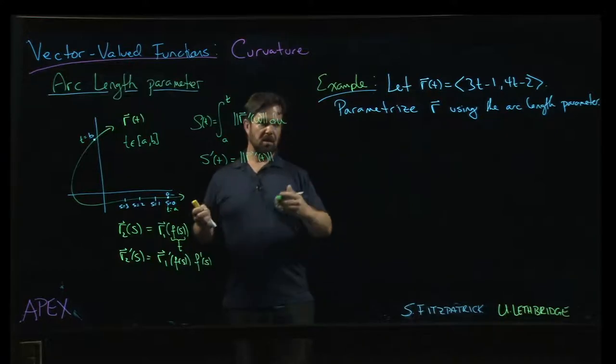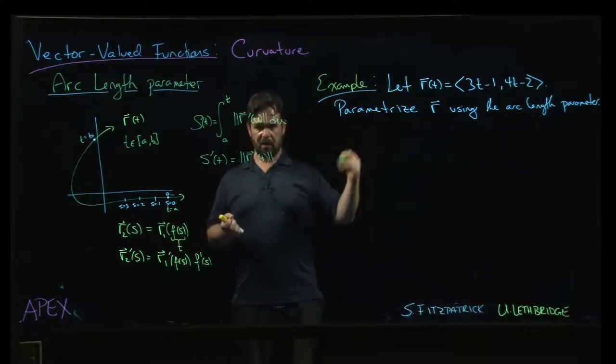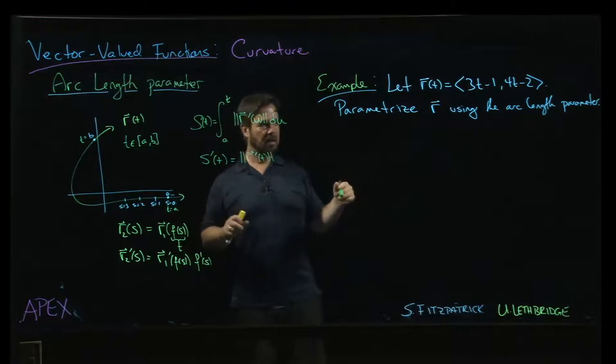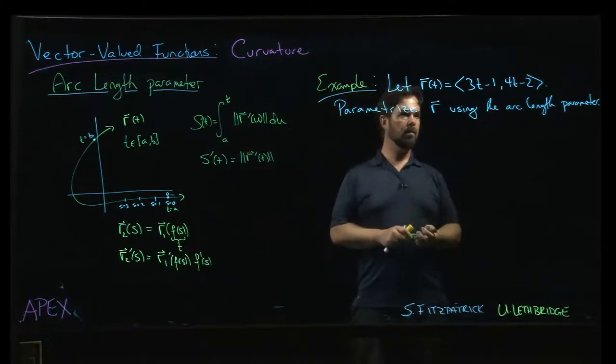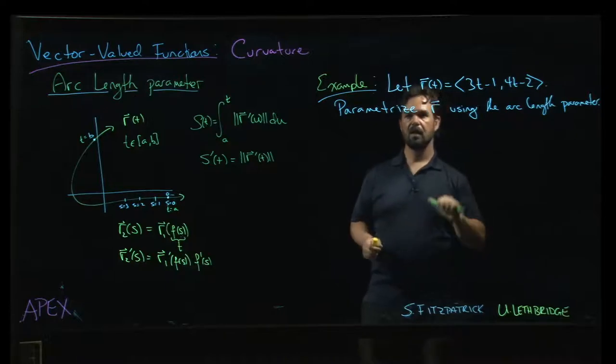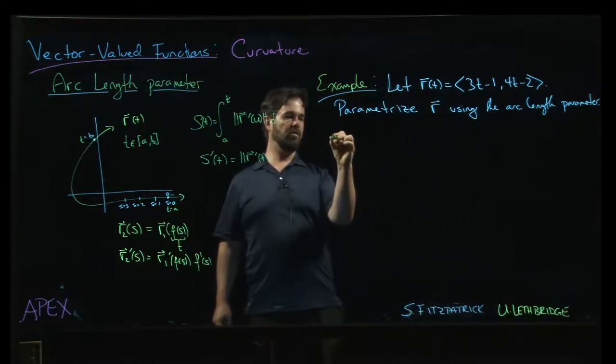So if we were to bother graphing this, we would get a straight line. I think we'll skip the graphing, but this gives us a straight line that is traversed.